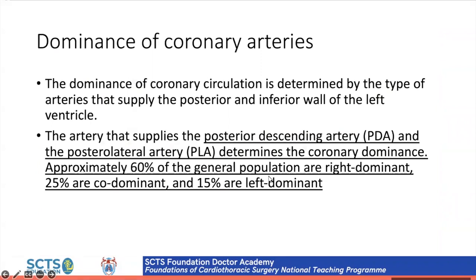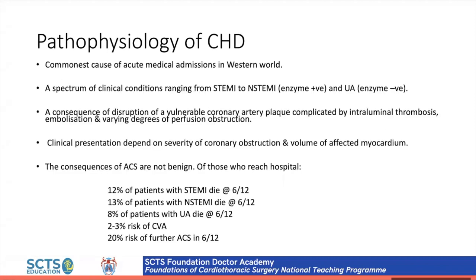Coronary dominance refers to which coronary artery supplies the posterior inferior wall and inferior septum via the posterior descending artery (PDA). In most cases the PDA comes from the right coronary; in about 15% it comes from the left; and about 20–25% of patients have co-dominance. This is particularly important when protecting the heart and when revascularizing to ensure coverage of the inferior aspects.